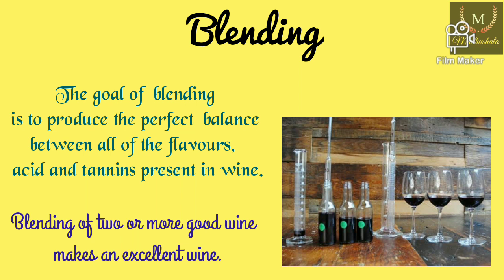Wine blending is done just before bulk aging to allow the separate wines to make friends with each other. The goal of blending is to produce a perfect balance between all the flavors, acid, and tannins present in the wine. Blending two or more good wines makes an excellent wine. The winemaker plays a key role in deciding the final blend. Blending can be avoided depending on the winemaker's choice.